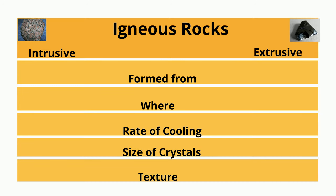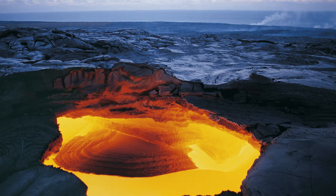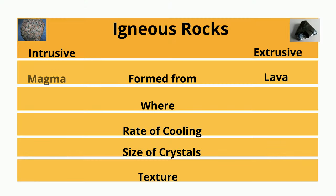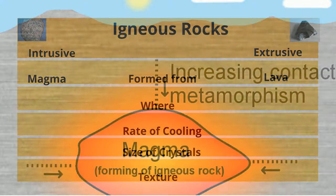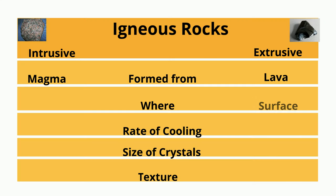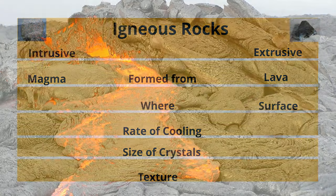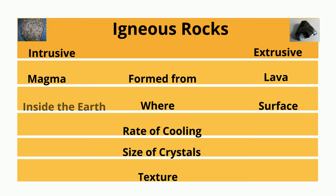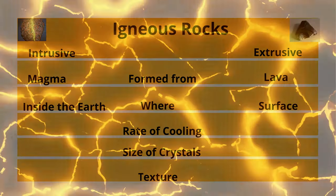Extrusive igneous rocks are created from lava. Intrusive rocks are created from magma found inside the earth. Extrusive rocks are created on the surface where the molten rock has flowed and then cooled. Intrusive rocks are created inside the earth from hot magma.